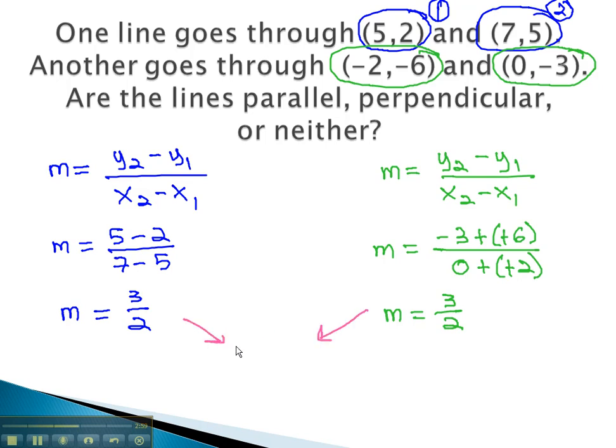Notice the two slopes we found, 3 halves and 3 halves, are the same. Lines that have the same slope are parallel to each other.